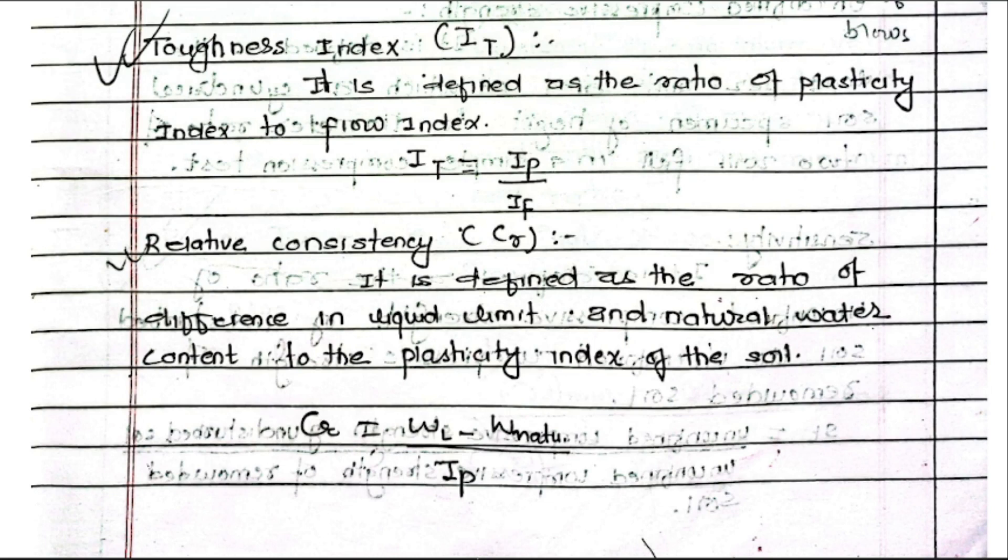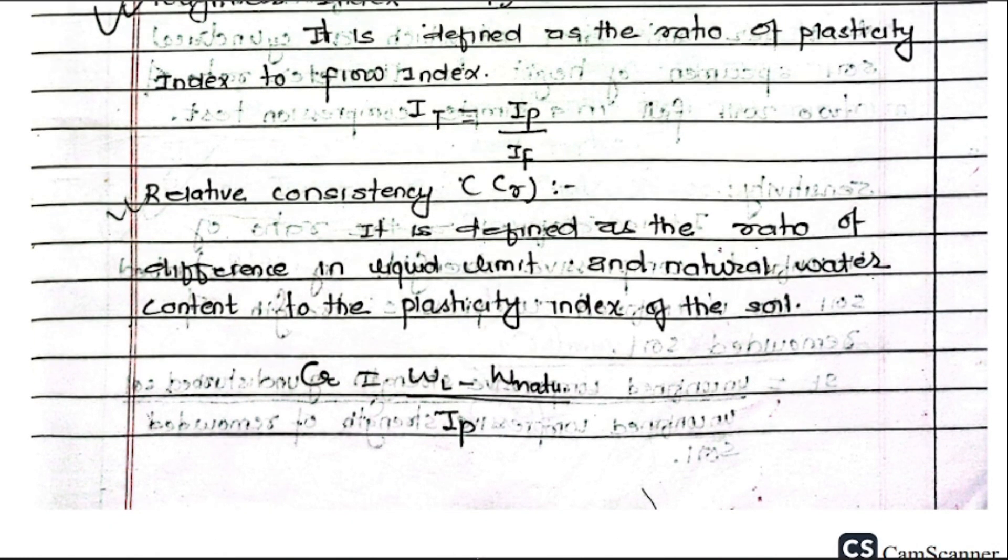Relative consistency CR: It is defined as the ratio of difference in liquid limit and natural water content to the plasticity index of the soil. CR equals WL minus W natural upon IP.